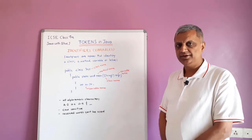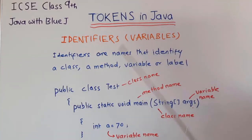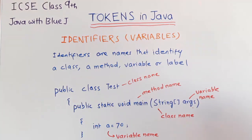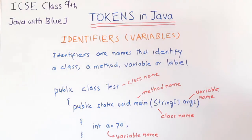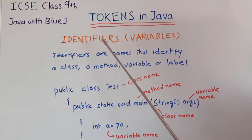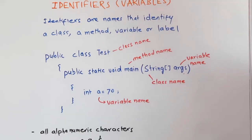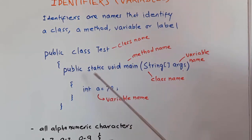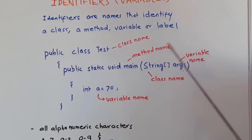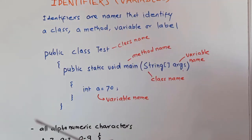Now let us see what identifiers are in Java. Identifiers are a type of token. An identifier is the smallest unit of a program that the compiler can understand. Identifiers are the names that identify a class, a method, a variable, or a label. In a program like 'public class Test', 'test' is the class name given by the user. In 'public static void main', 'main' is a method name. In 'String args', 'String' is a class name and 'args' is a variable name. All these names are called identifiers.